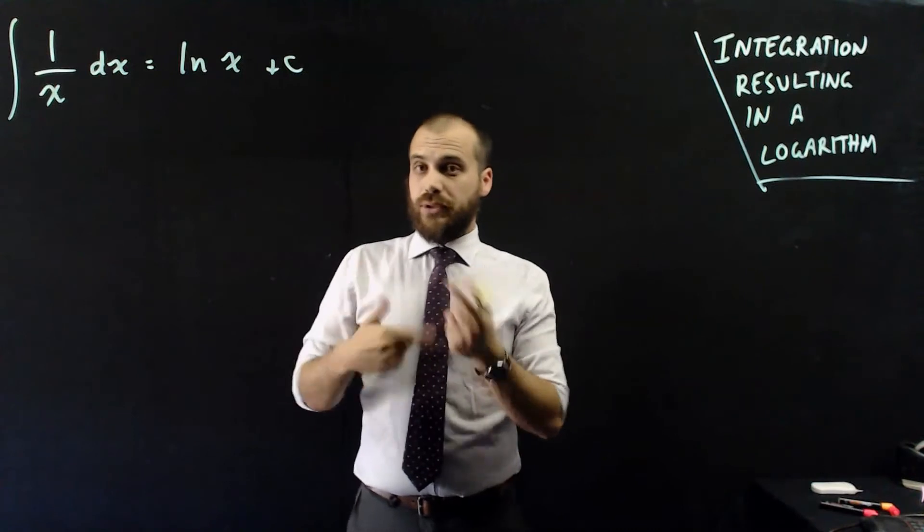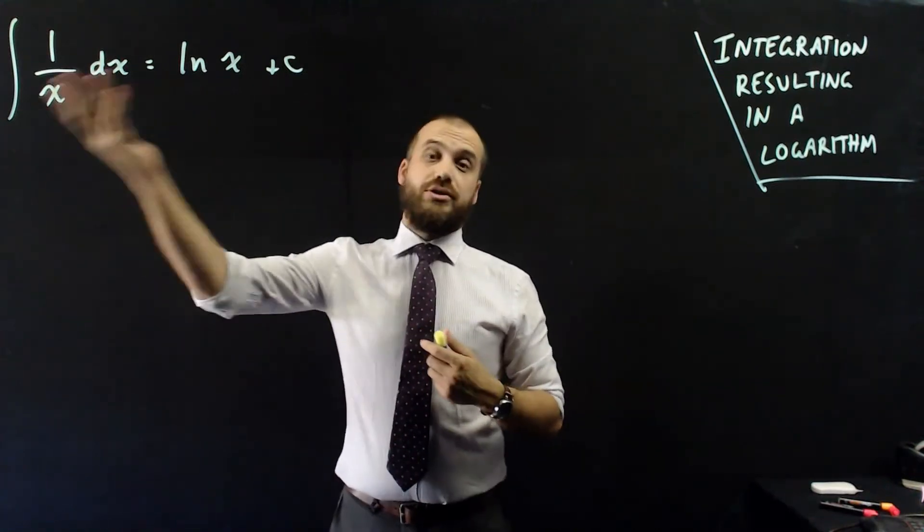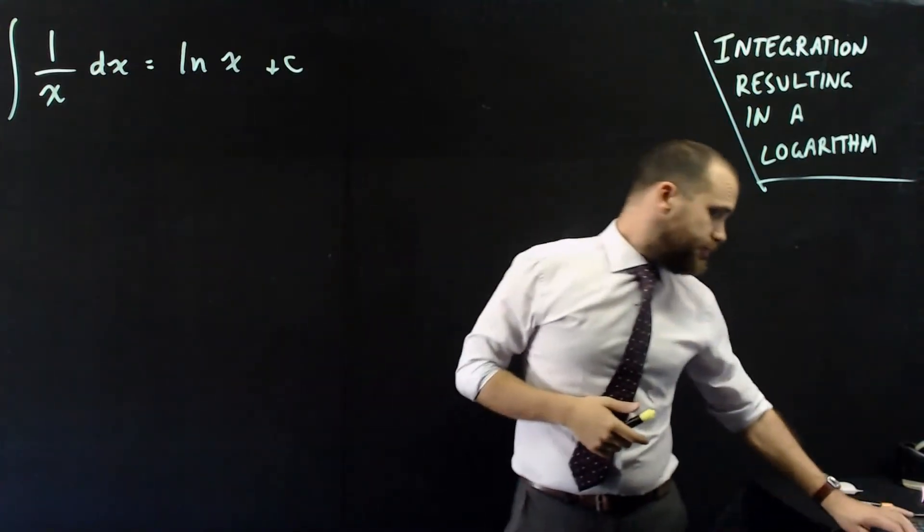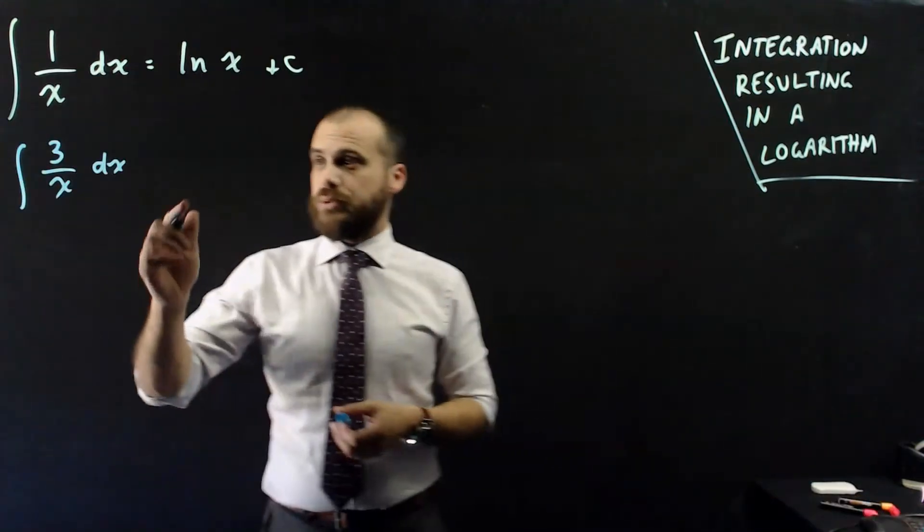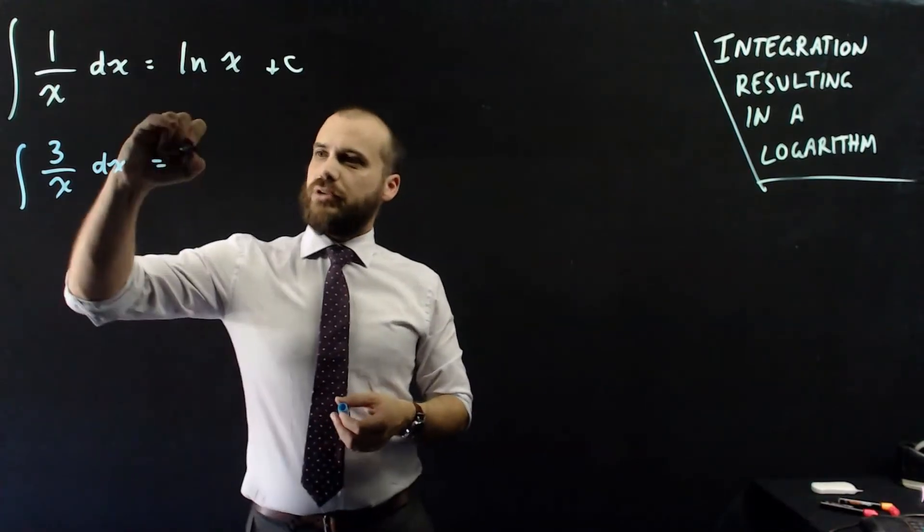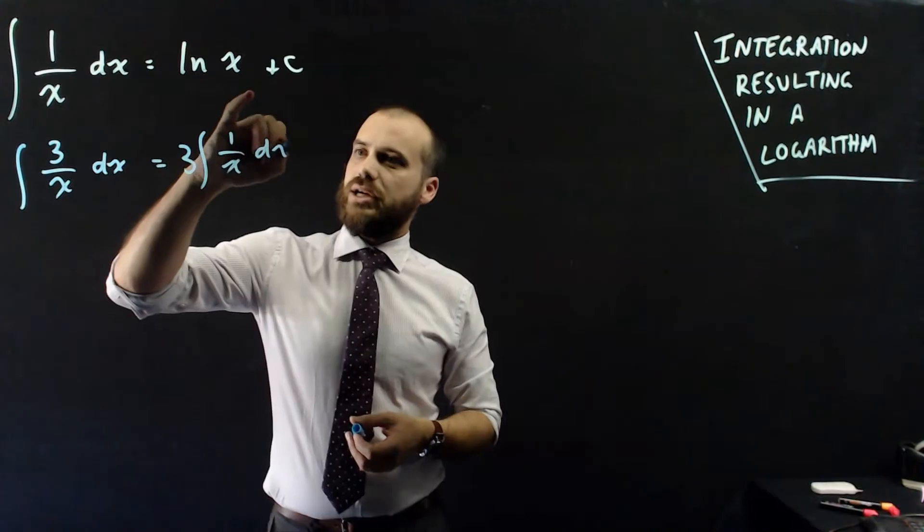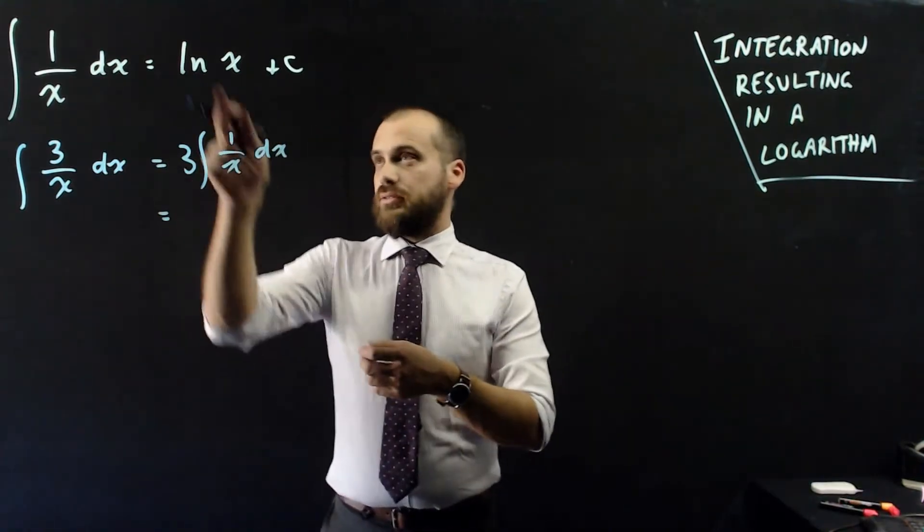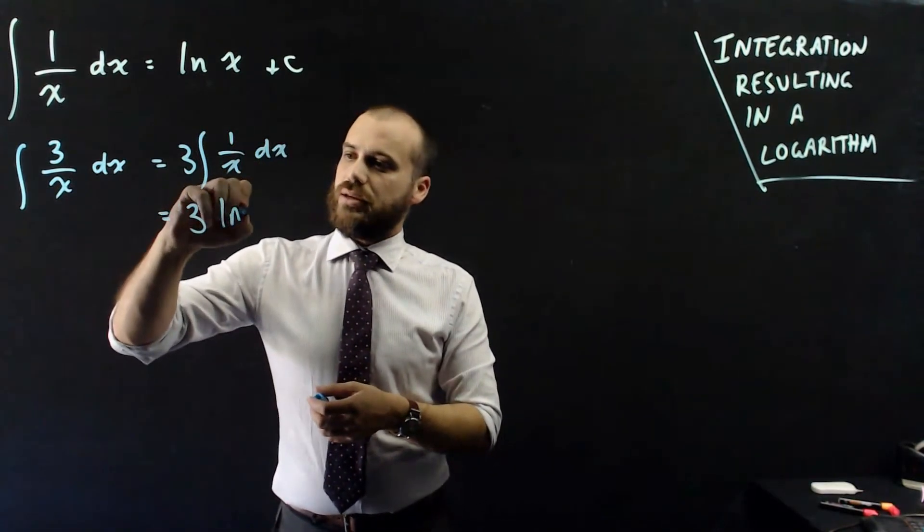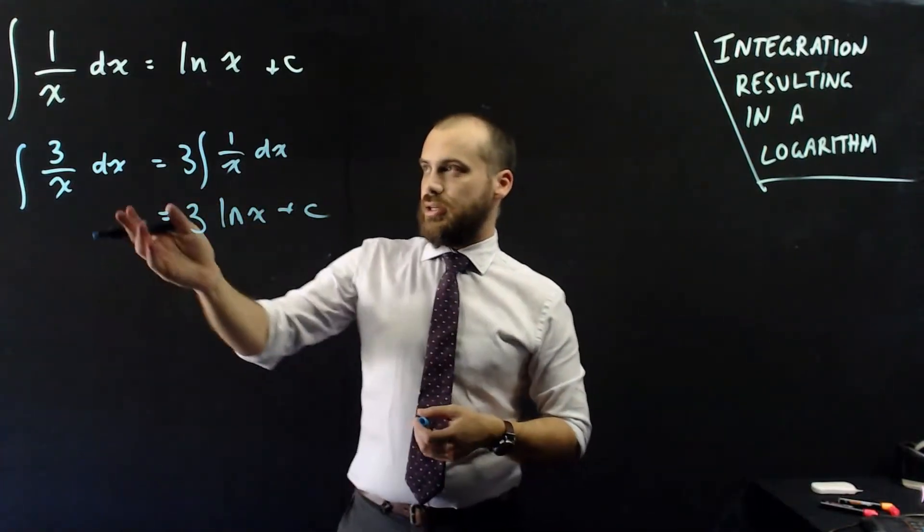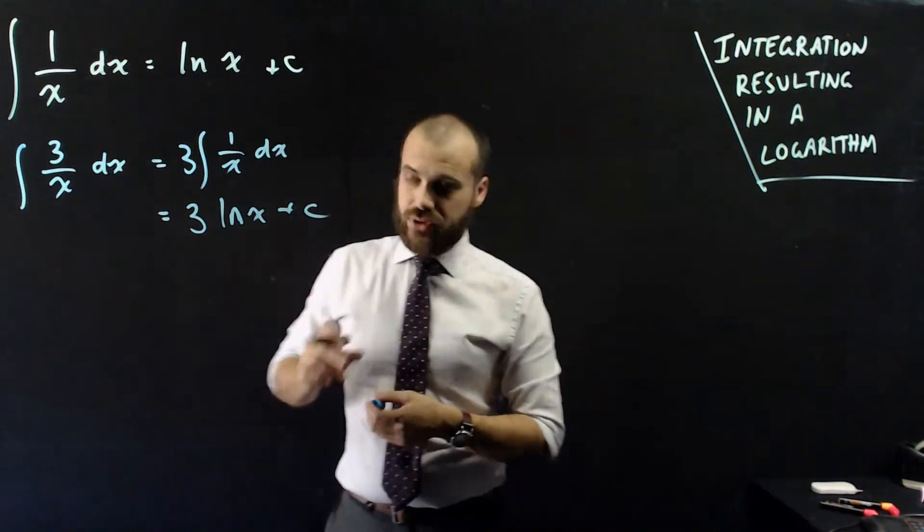There are a couple of key questions. This is our first example when it comes to this stuff. Let's do a couple more examples. Now, the integral of 3 on x with respect to x, well, that could be rewritten as 3 times the integral of 1 on x with respect to x, and that is ln x. So now we have 3 times ln x and plus c. So, there's our first two examples.